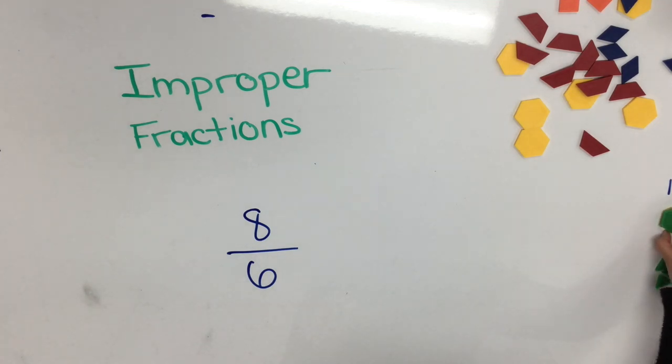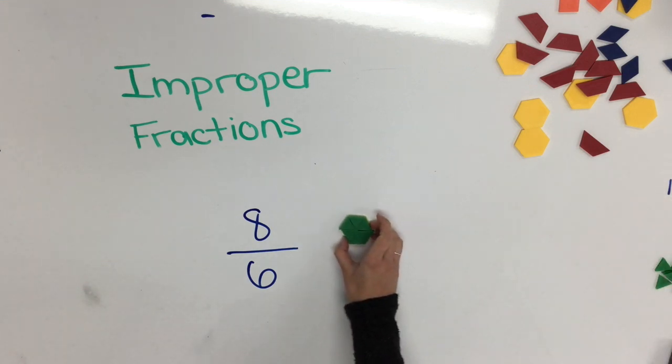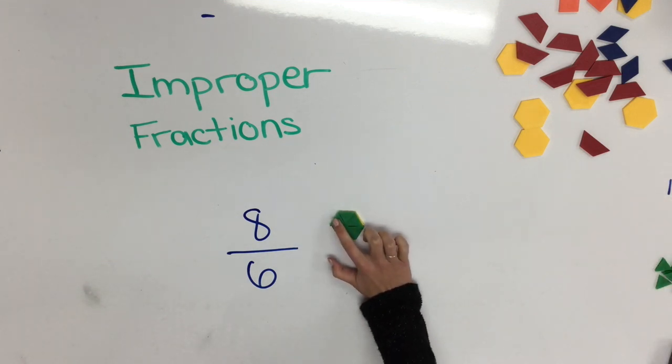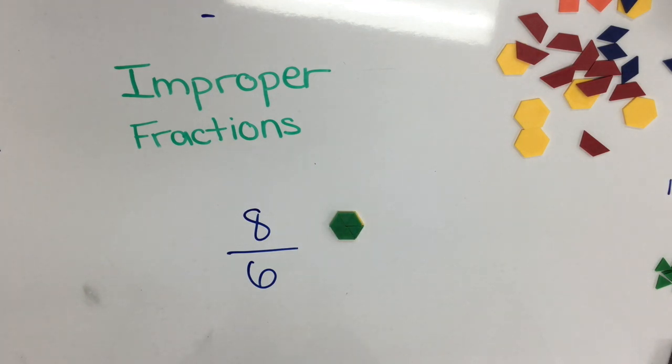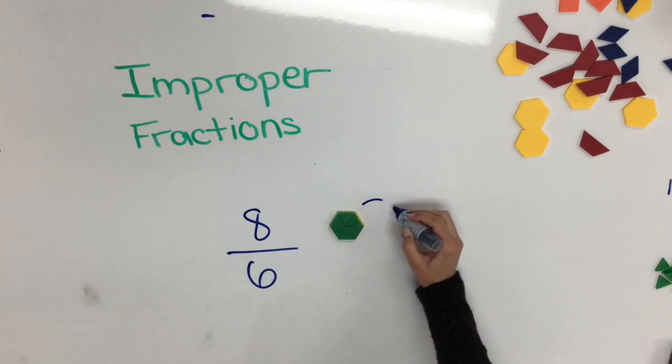So this time I can take my same hexagon and split it into one, two, three, four, five, six equal pieces to make our whole.